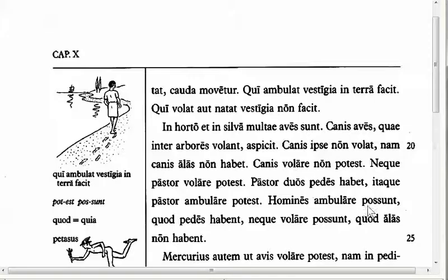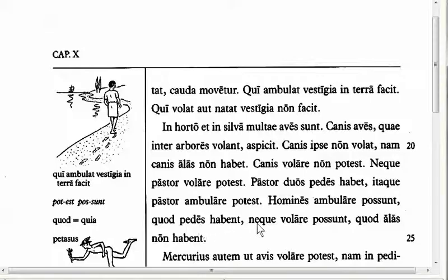Now let's move on to line 24, where we have another kind of conjunction. We have homines ambulare possunt, quod pedes habent, neque volare possunt, quod alas non habent. People are able to walk because they have feet, and they're not able to fly because they don't have wings. Here we have quod twice. Both are conjunctions, but we call them causal conjunctions because they're telling us the cause or the reason.